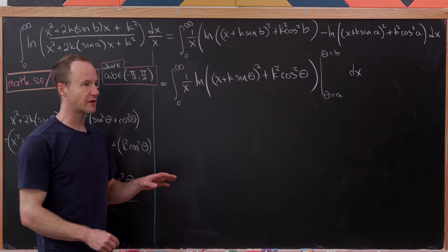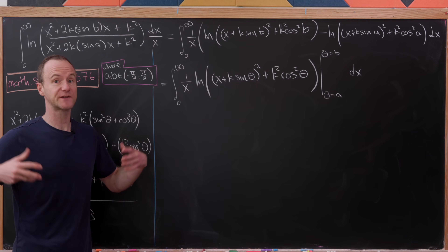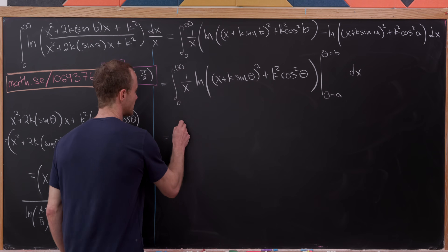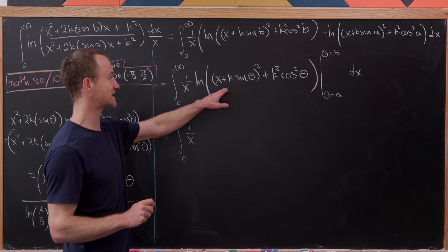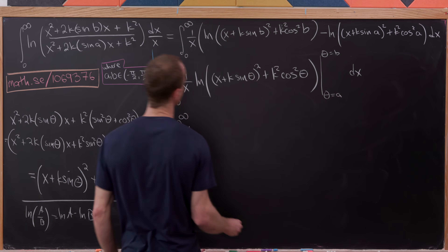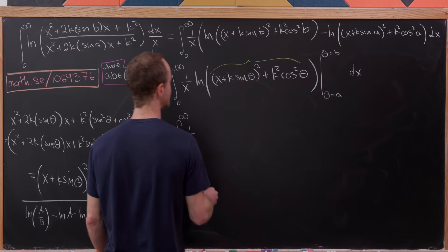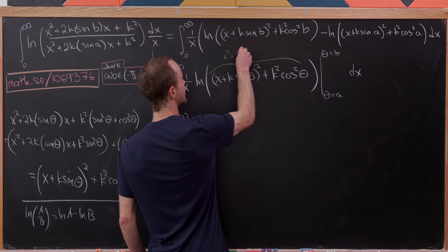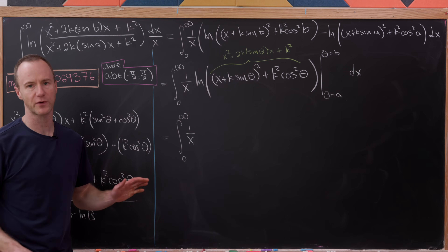Now we apply the fundamental theorem of calculus. I think of the evaluation expression as a 0th integral that I can transform into a first integral by taking the derivative and inserting an integral. So we still have the integral from 0 to infinity of (1/x), and now we take the derivative with respect to θ. To apply the chain rule more cleanly, we recall the form x² + 2k sinθ · x + k² before squaring was completed.